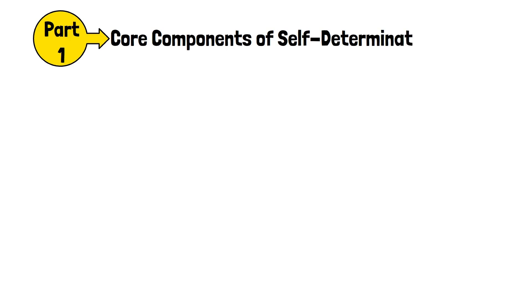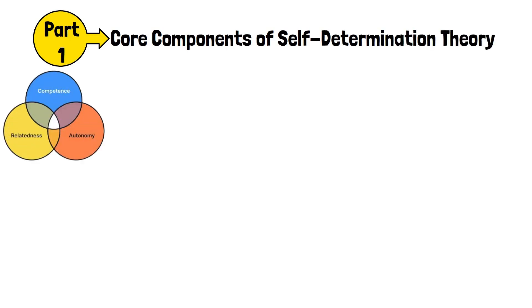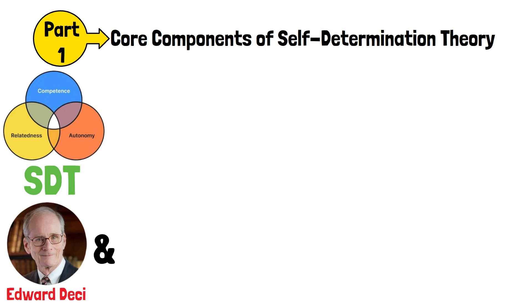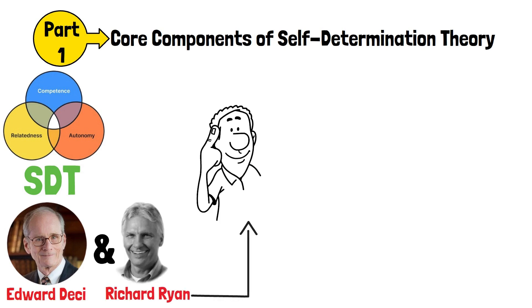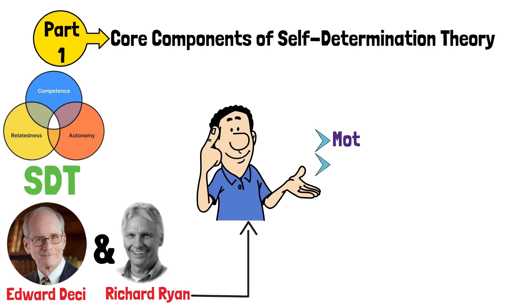Self-Determination Theory Explained, Part 1. Core Components of Self-Determination Theory. Self-Determination Theory, or SDT, proposed by Edward Deci and Richard Ryan, is a framework for understanding human motivation and personality.